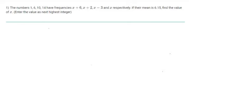Hello guys, today we will solve the IITM qualifier exam week 3 graded statistics assignment. In this question, it says that the numbers 1, 6, 10, 14 have frequencies x plus 6, x plus 2, x minus 3, and x. If their mean is 6.15, find the value of x.